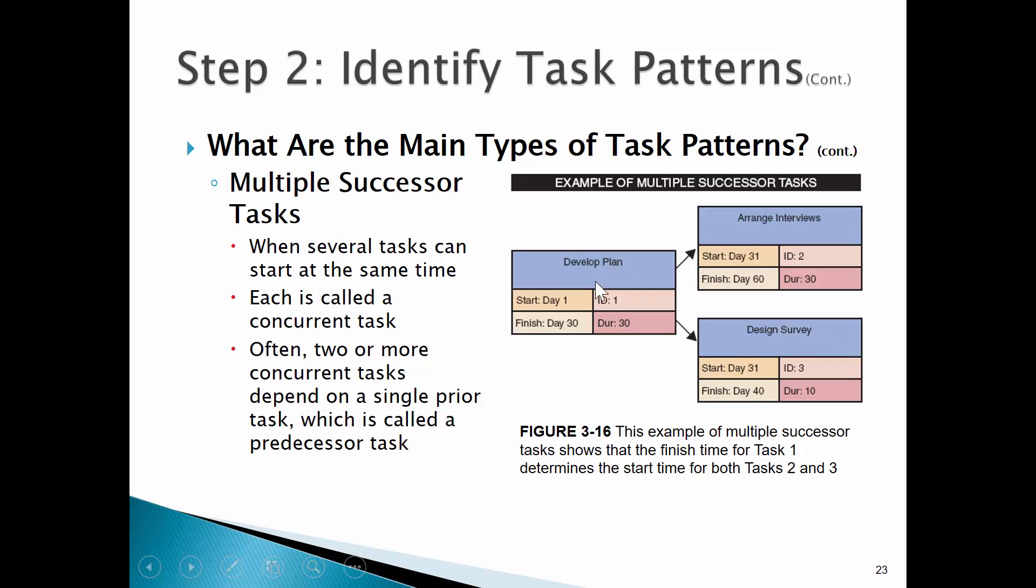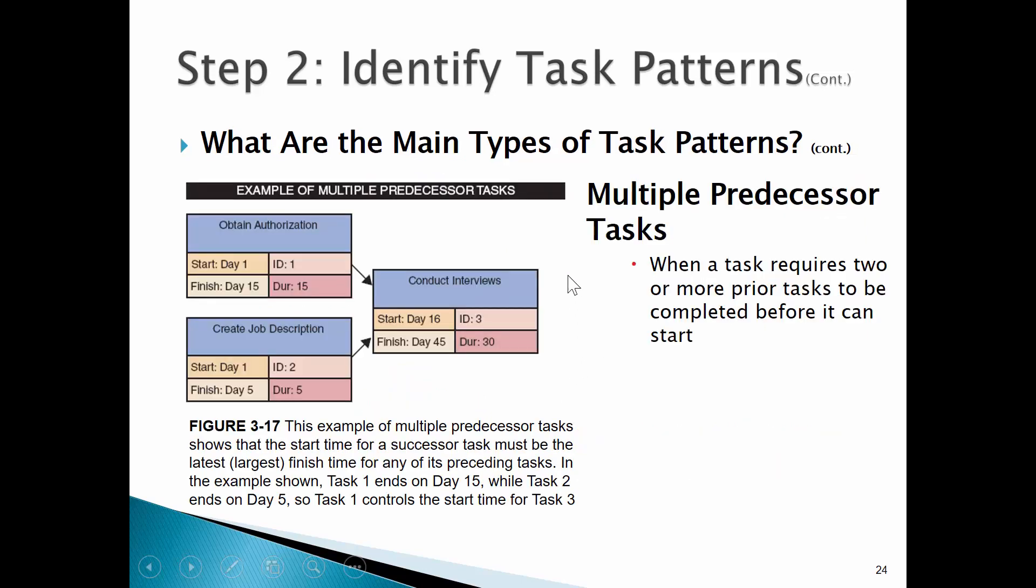One of the things I'll explain in that video about creating a PERT CPM chart is make sure you count on your fingers. What I mean by that is whatever the finish day is of one task, we can't start the next task until the next day. What are main types of task patterns? Dependent tasks - prepare outline, create document. We need to prepare the outline before we can create the document. Multiple successor tasks - develop a plan, but we can arrange interviews and start designing the survey at the same time. Predecessor tasks - before we can conduct interviews, we have to obtain authorization and create a job description.